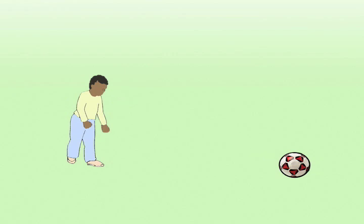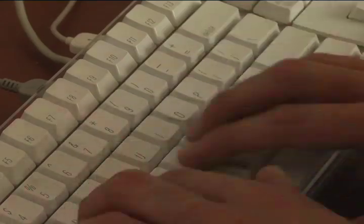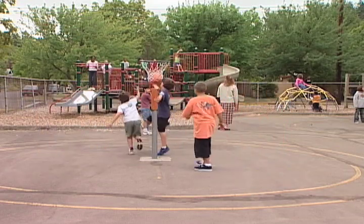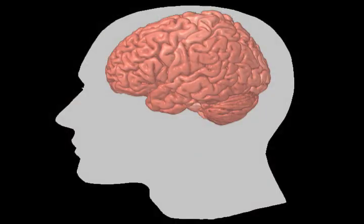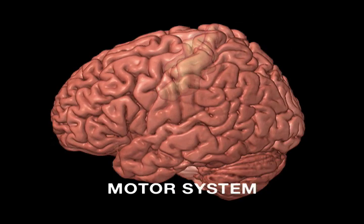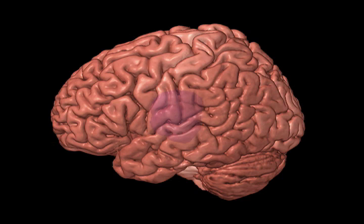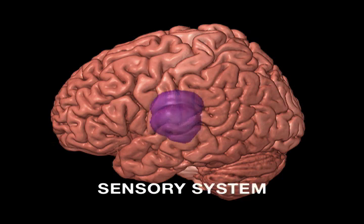Just as we must learn to use our muscles to accomplish any number of physical tasks, motor development entails more than just learning to use muscles. A child's changing brain must learn how to coordinate information from several brain systems in order to make a specific movement. These systems control movement, balance, and even brain areas that relay input from the surrounding world.